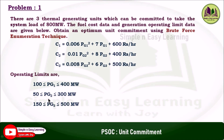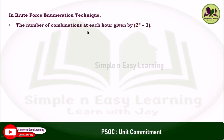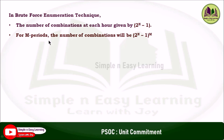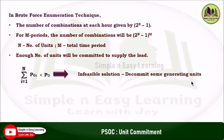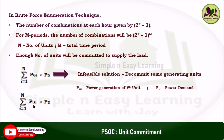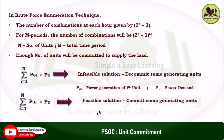In this problem we are going to use the brute force enumeration technique to solve the optimum unit commitment. In brute force enumeration technique, the number of combinations at each hour is given by 2 power n minus 1. For m periods, the number of combinations will be 2 power n minus 1 power m, where n is number of units and m is total time period. Enough units must be committed to supply the load demand. If summation of pgi is less than pd, the solution will be infeasible, where pgi is power generation of the ith unit and pd is the power demand. If the total generation is greater than the demand pd, then the solution becomes a feasible solution.